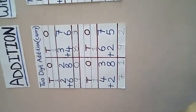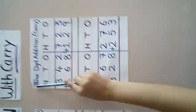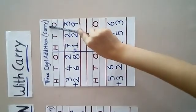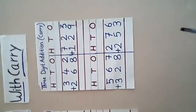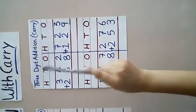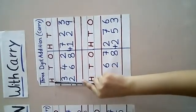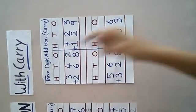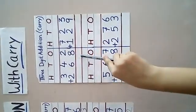Now, we will proceed with 3 digit addition. 3 digit addition with carry. See, students. Here also the rule is same. We have to start from 1's. Here, H stands for 100's, T for 10's, and O for 1's only. And we have to start from 1's.